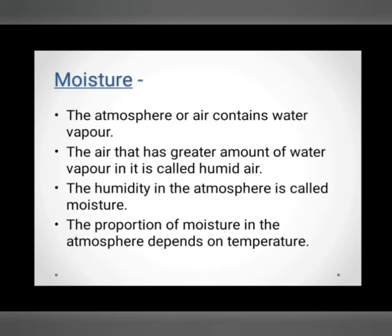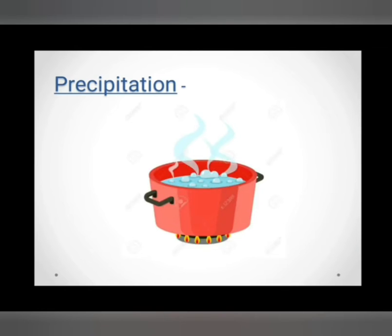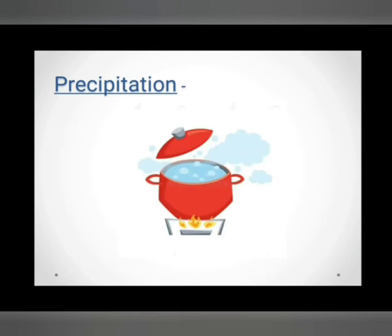Our next element is precipitation. Let's take an example. Suppose you have kept water to boil and you keep a lid on it. After some time, when you lift the lid, you will observe water vapours are sitting on the lid. And when you move the lid, water droplets start falling off.